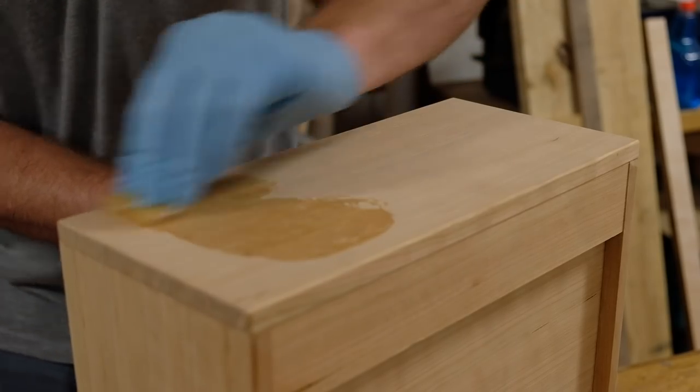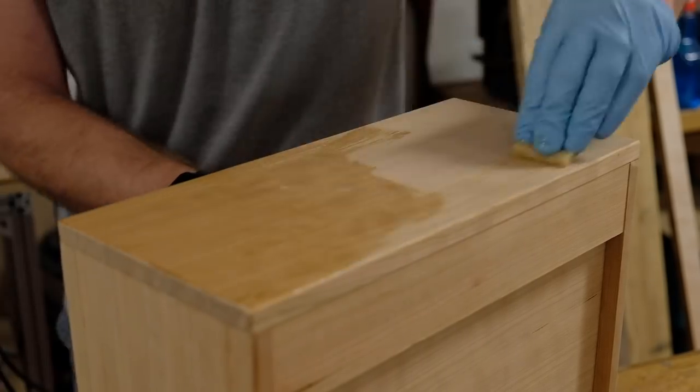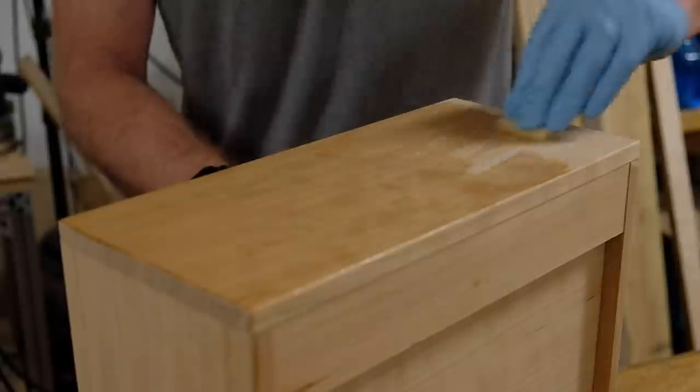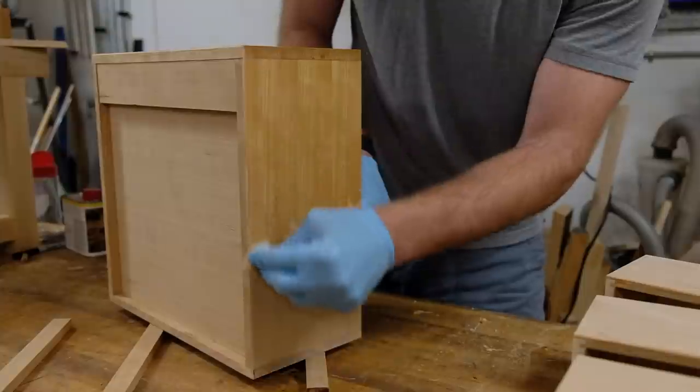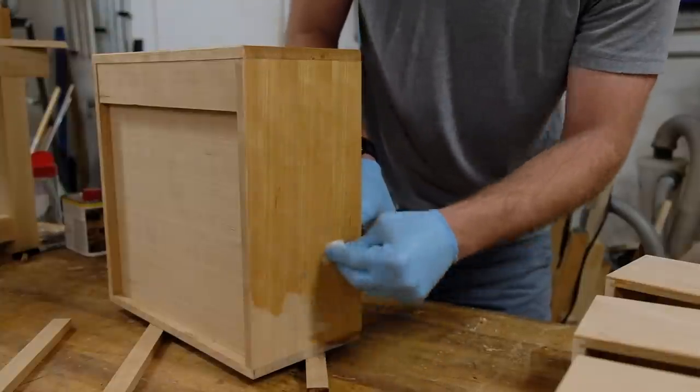While the inside of the project got a single coat of shellac, the outside gets two coats of Osmo Top Oil. I apply the oil with a white scotch brite pad, let it sit for a few minutes, then wipe it completely dry with some blue shop towels.